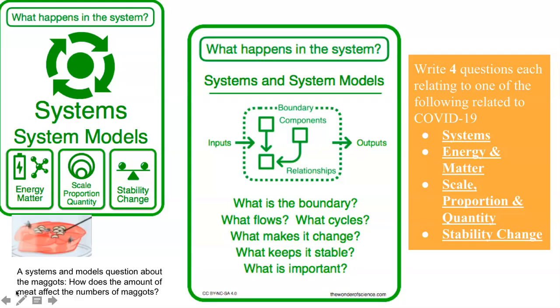We can also ask about what is happening in systems or system models. Defining the system under study, specifying its boundaries, and making explicit a model of that system provides tools for understanding and testing ideas that are applicable throughout science and engineering. Within the system in question, what are the flows and cycles? And consider conservation of energy and matter — tracking fluxes of energy and matter into, out of, and within the system helps one understand the system's possibilities and limitations.